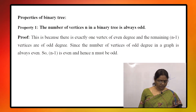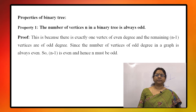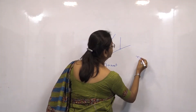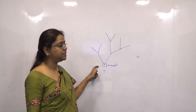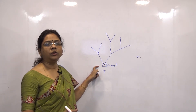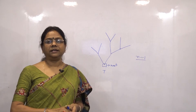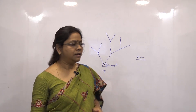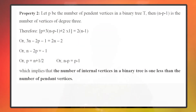There are 2 properties of a binary tree. The first one is: the number of vertices n in a binary tree is always odd. If the number of vertices is n, there is only 1 vertex of degree 2 and all remaining vertices are of degree 1 or 3 — that is, odd degree vertices. So the number of odd degree vertices is n-1, and we know the number of odd degree vertices in any graph is always even. So n-1 is even, which means n is odd.